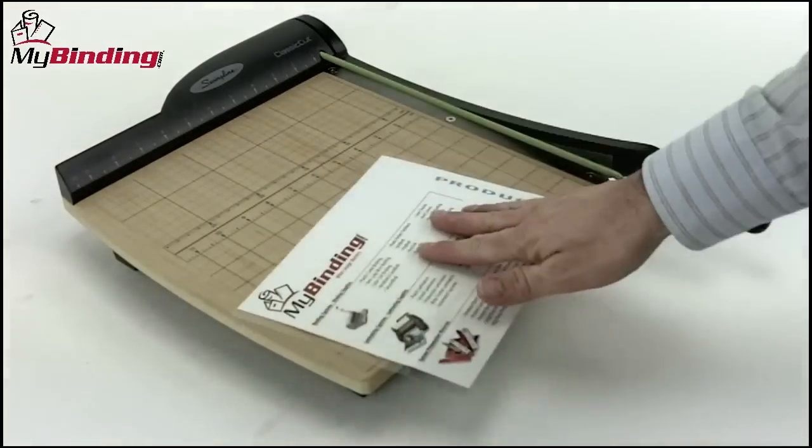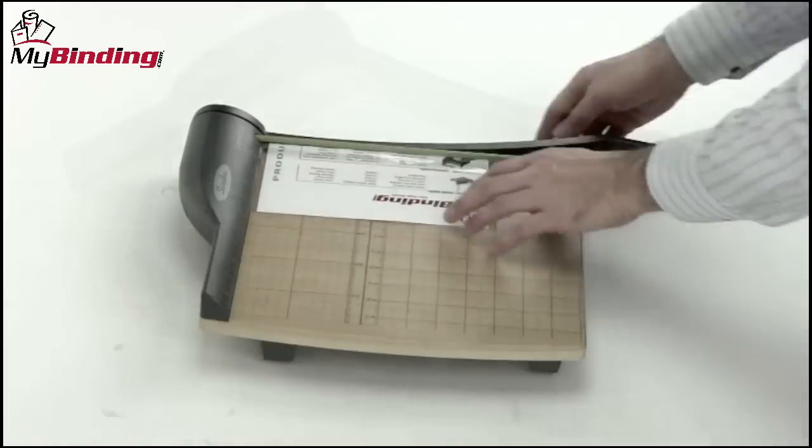Release the cutting arm with a latch on the right-hand side. Using the US and metric grid, align your paper and make your cut.